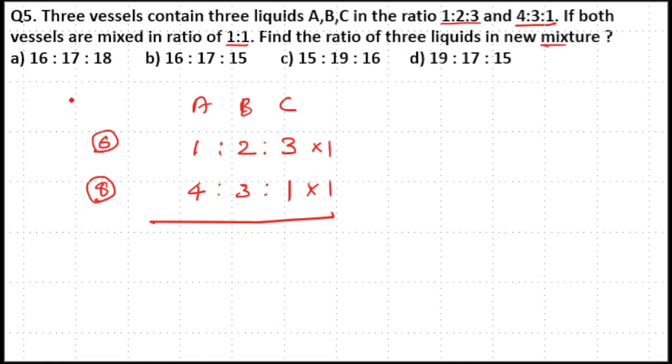LCM of 6 and 8 is equal to 24. 6 times 4 equals 24, so multiply first ratio with 4. 8 times 3 equals 24, multiply 3 with the second ratio.